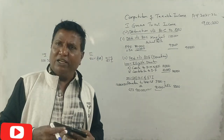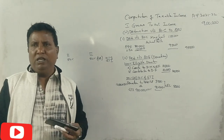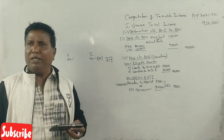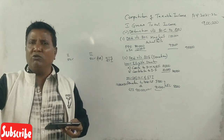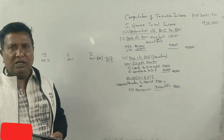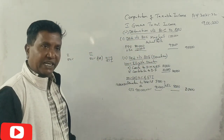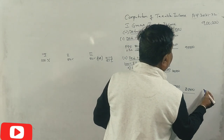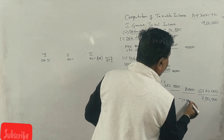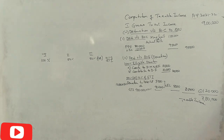For example, Shirdi Sai Baba Trust is an approved charitable institution with a large donation collection. If you donate 50,000 rupees to Shirdi and it is an approved trust, you get 50% deduction, which is 25,000 rupees, subject to the 10% of gross total income limit.